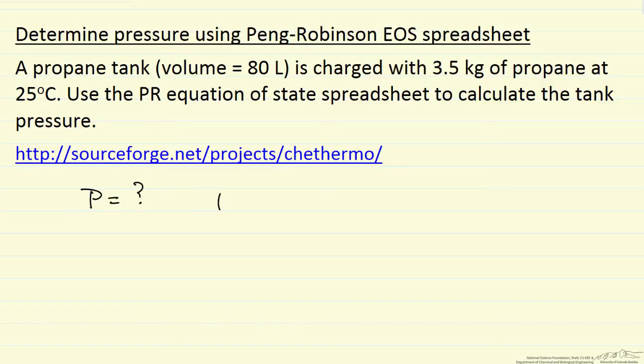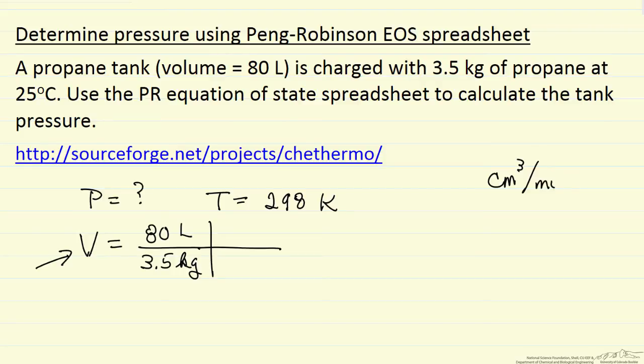The pressure we need to determine. The temperature is 25 degrees C, or 298 K. The volume is 80 liters, and keep in mind this is the specific volume, so we want volume per mole. We have 80 liters and 3.5 kilograms, so we need to do some unit conversion. The spreadsheet uses cubic centimeters per mole.